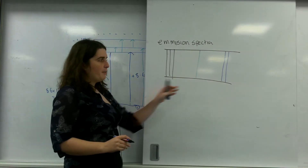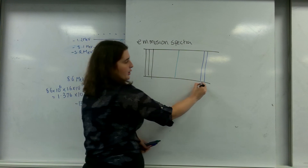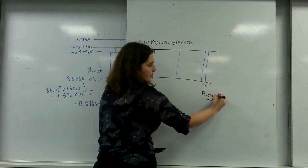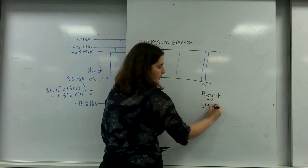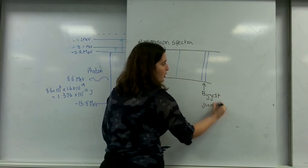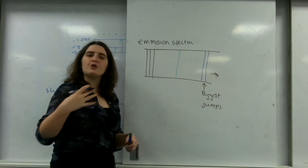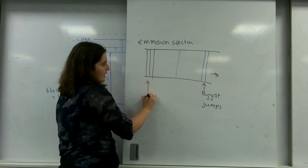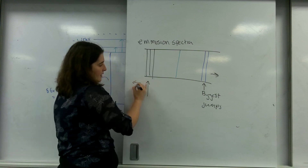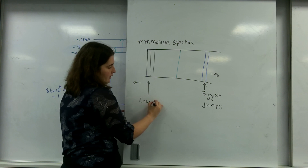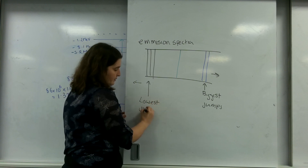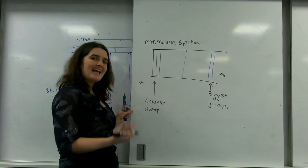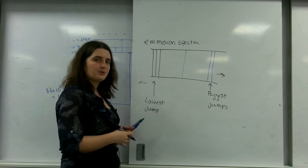The blue wavelengths are made by the biggest jumps — blue and beyond, going to UV, going to gamma. The lower-energy wavelengths are made by the lowest jumps. So the smaller the gap, the less energy there is, and the redder the wave.